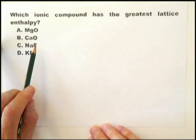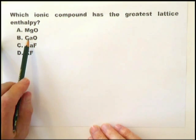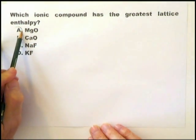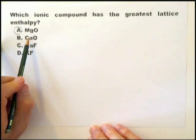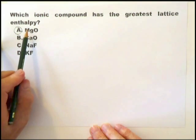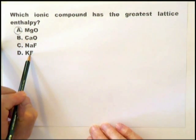The next thing to take into account is the size of the ionic radius. And the smaller the ionic radius, the greater the lattice enthalpy. So we end up with A, simply because, in this case, magnesium has a smaller ionic radius than calcium. So magnesium oxide has the greatest lattice enthalpy than all of these four.